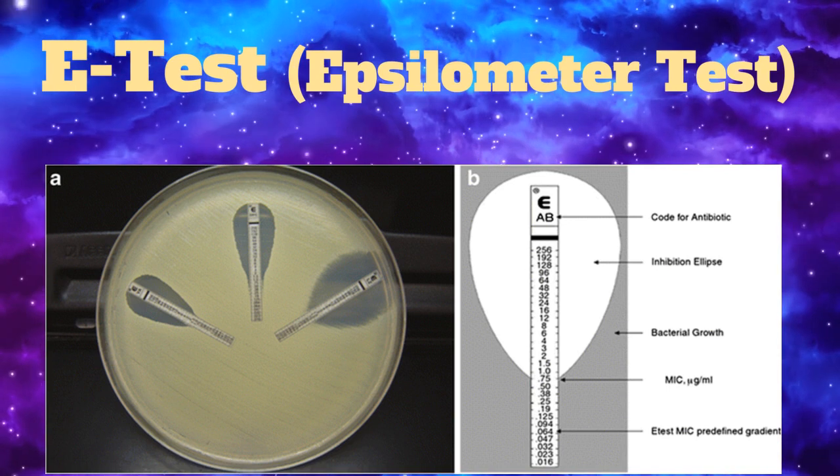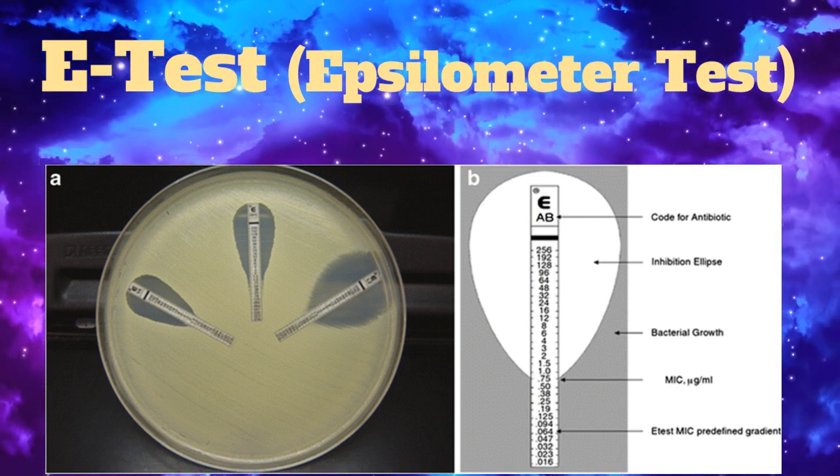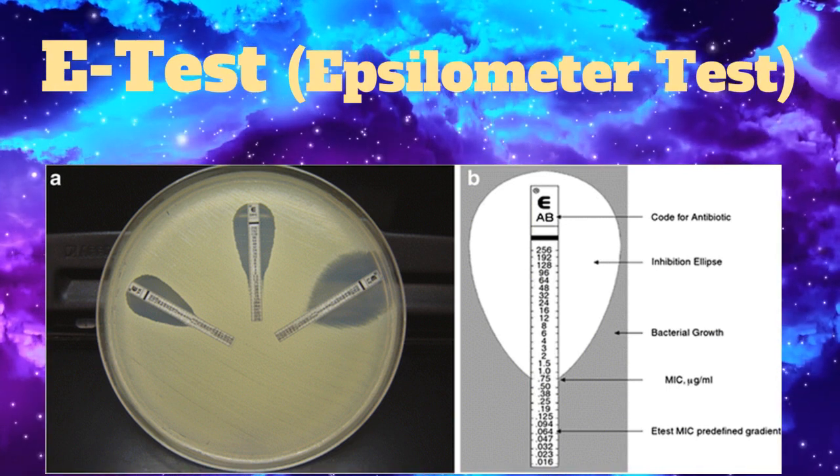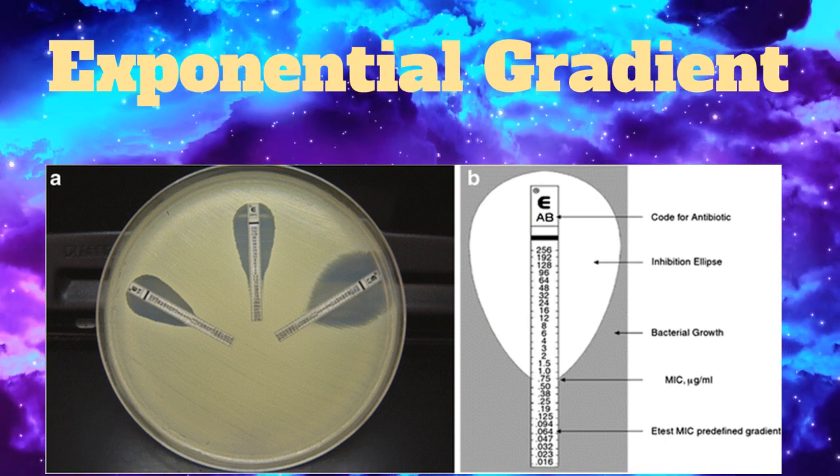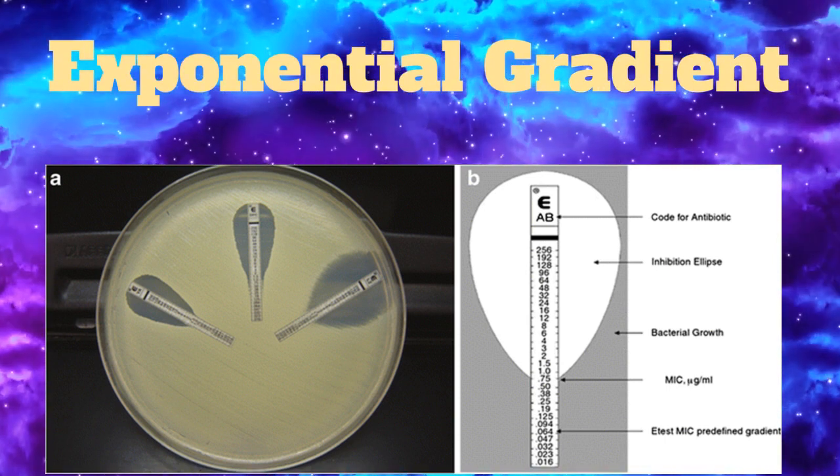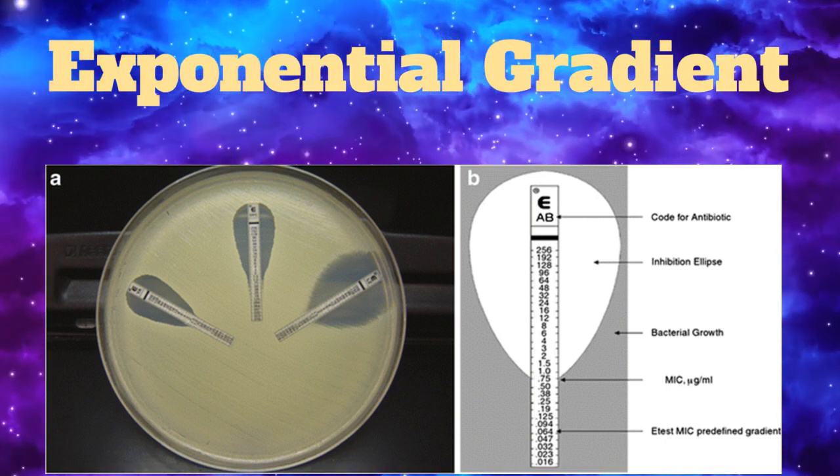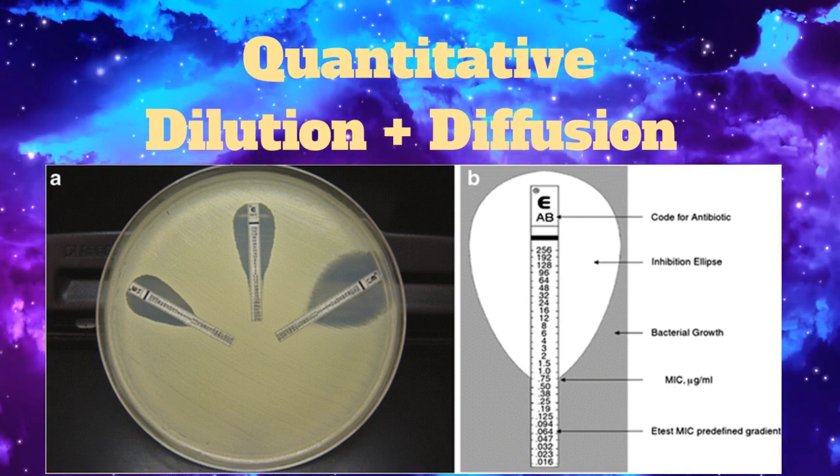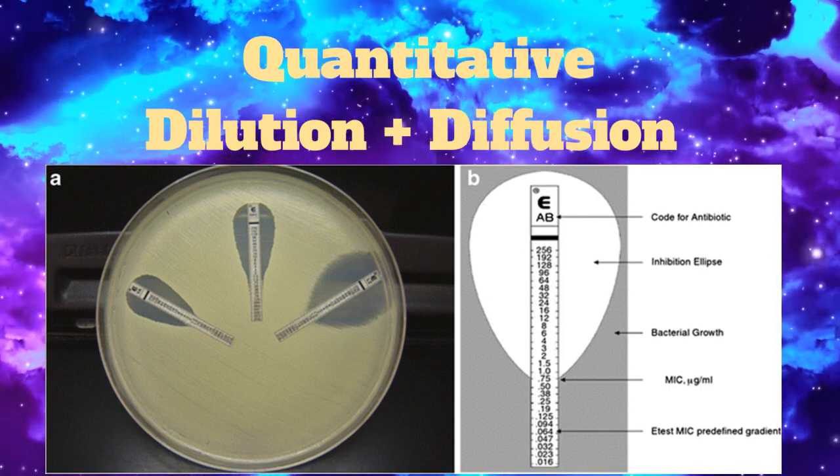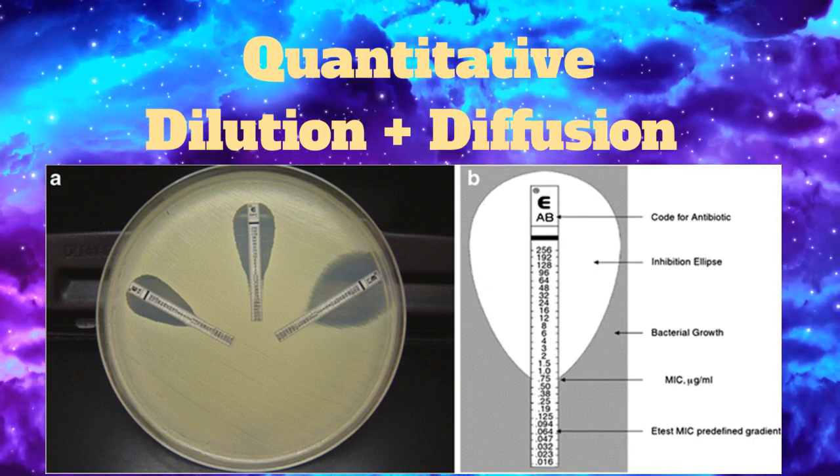Now coming to the Epsilometer test, also known as E-test, it is an exponential gradient method to determine antimicrobial susceptibility. It is a quantitative method that applies both the principle of dilution and diffusion of antibiotic into the medium.